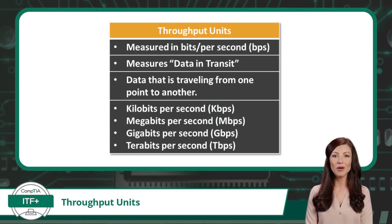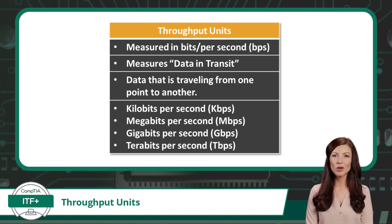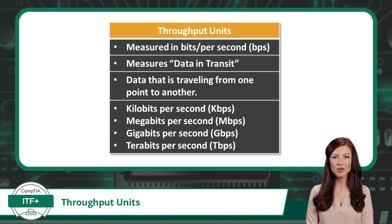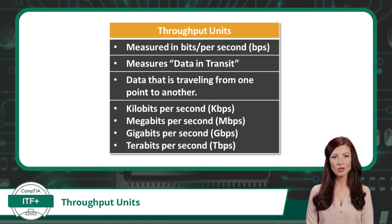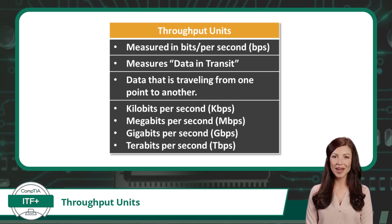Throughput units are measured in bits per second — that is lowercase 'b' for bits, not uppercase 'B' for bytes. Bits per second can measure any digital data traveling from one point to another, including network connections between computing devices or internal connections between computing components. Anytime you have data on the move, the preferred unit of measure will be bits per second.